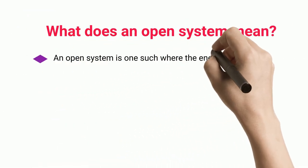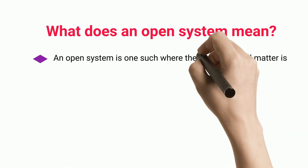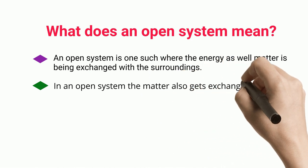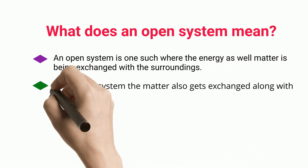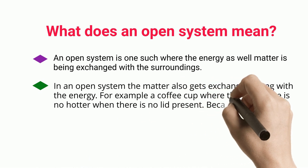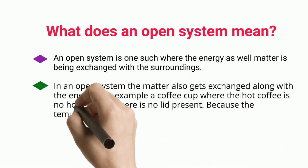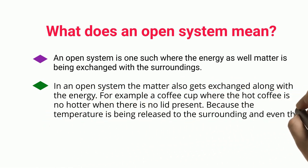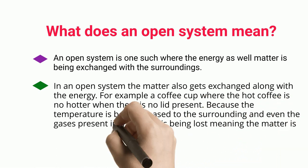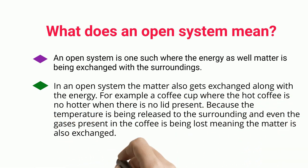An open system is one where energy as well as matter is exchanged with the surroundings. In an open system, matter also gets exchanged along with energy. For example, a coffee cup without a lid — the hot coffee is no longer as hot because the temperature is being released to the surrounding, and even the gases present in the coffee are being lost, meaning matter is also exchanged.